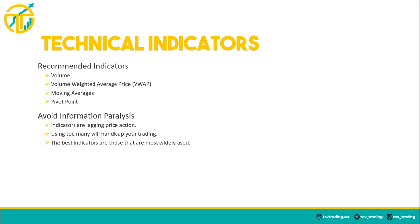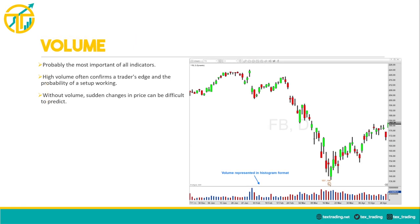Technical indicators are another form of technical analysis that traders can use to determine trends and spot trading opportunities. There's a vast amount of indicators you can add to your chart, but I'm only going to recommend a few. It's very easy to fall into the trap of using too many indicators as a new trader, so I want to keep things as simple as possible. My preferred indicators include volume, volume weighted average price, moving averages, and the pivot point study. The key to using any indicator is that it's widely used — the more market participants using a particular indicator, the better it will work.